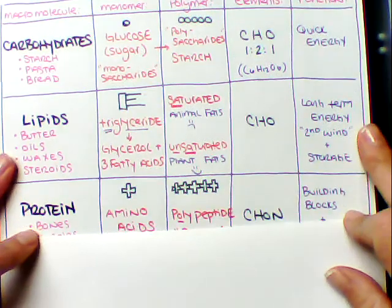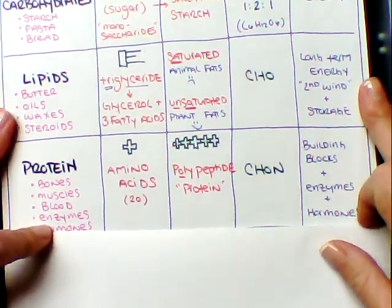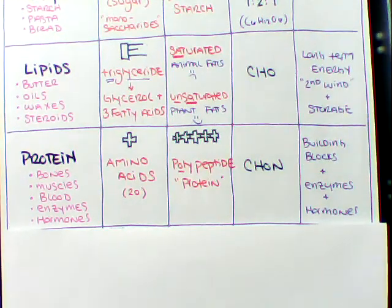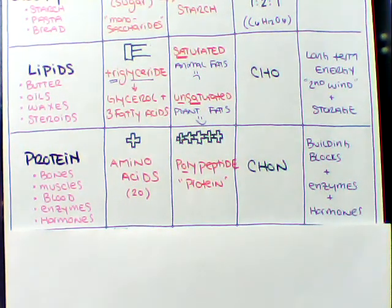Let's go ahead and talk about the next round here, which is our proteins. Feel free to stop this video at any time to write this stuff down. Now, proteins are like your bones, your muscles, blood, enzymes, hormones, things like that are made of proteins.